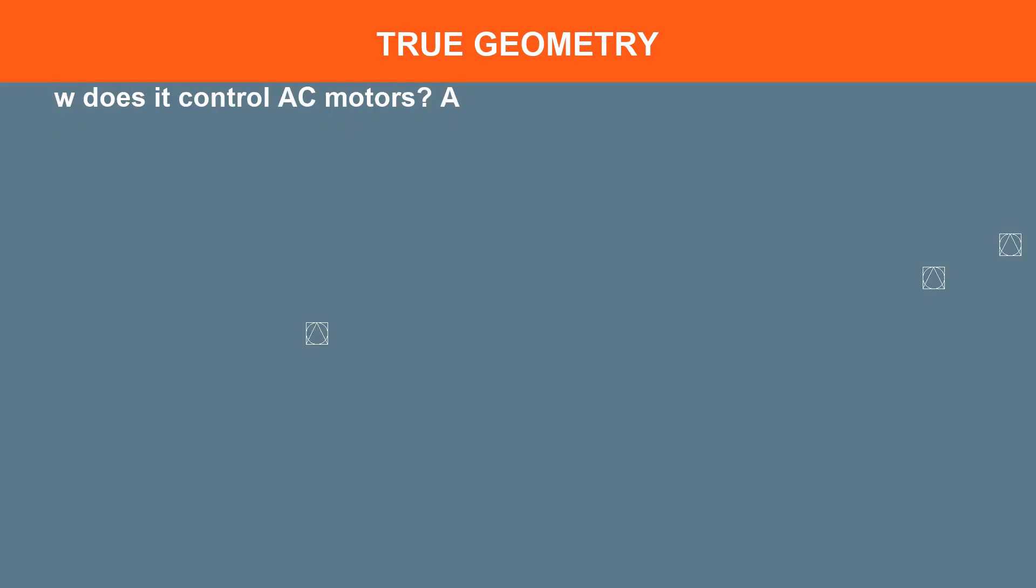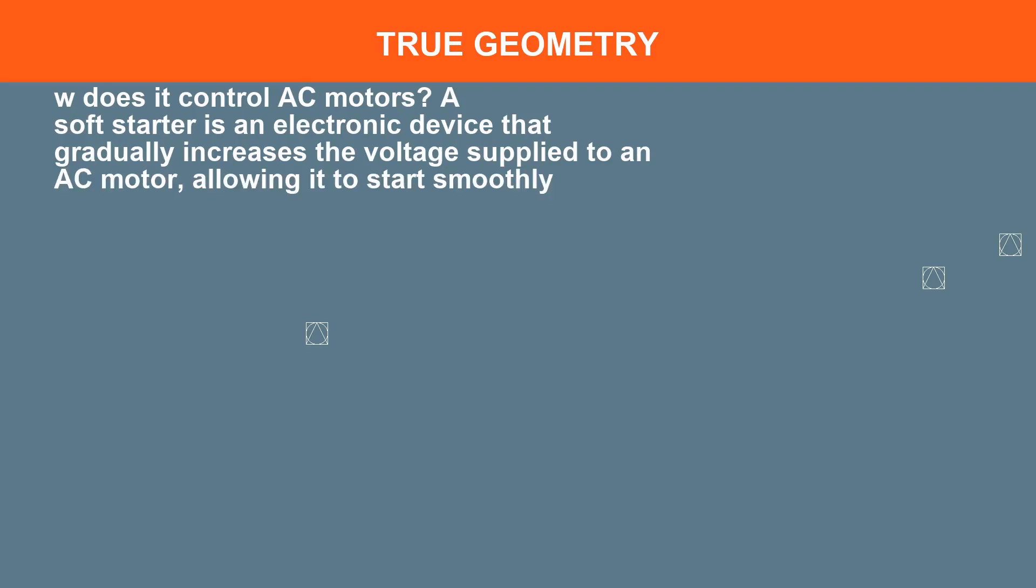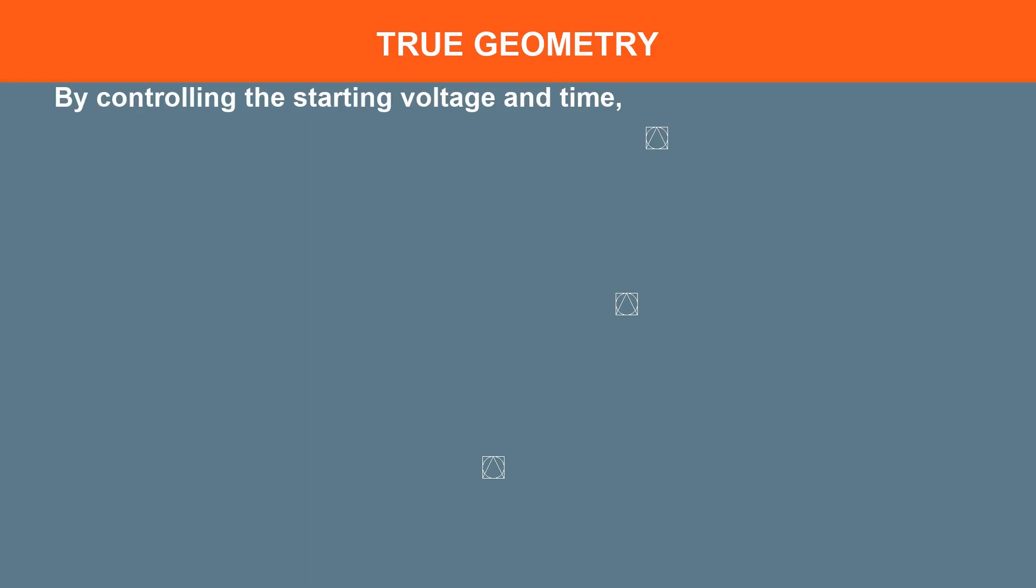How does it control AC motors? A soft starter is an electronic device that gradually increases the voltage supplied to an AC motor, allowing it to start smoothly and reduce the mechanical stress on the motor. By controlling the starting voltage and time, a soft starter can also control the speed and torque of the motor.